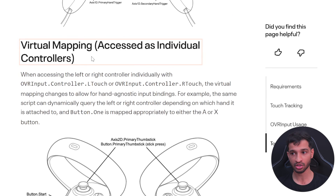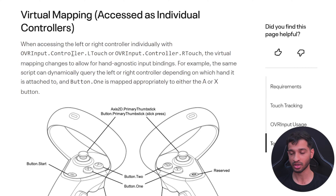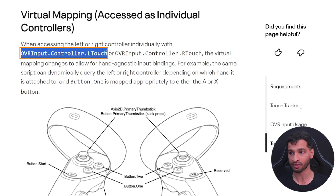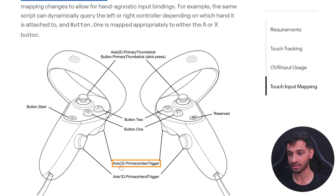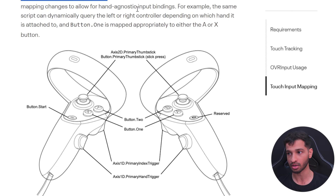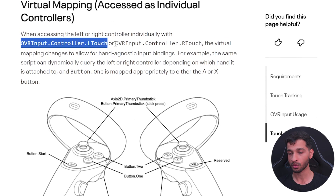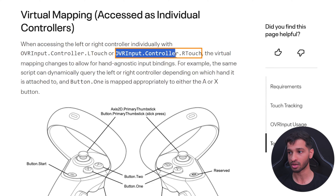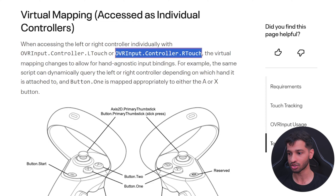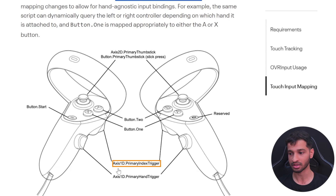The second way is by virtually mapping accessed as individual controllers. In this case you use OVRInput.Controller.LTouch followed by Axis1D.primaryIndexTrigger to access the left controller trigger, and OVRInput.Controller.RTouch with Axis1D.primaryIndexTrigger to access the right controller.